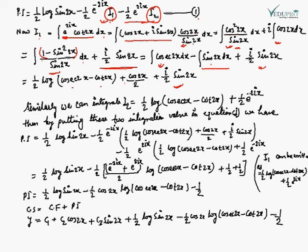Similarly, I2 = (1/2) log cos 2x − cos 2x − i(1/2) sin 2x. Now that we have both I1 and I2, we substitute their values back into the equation for the particular integral.